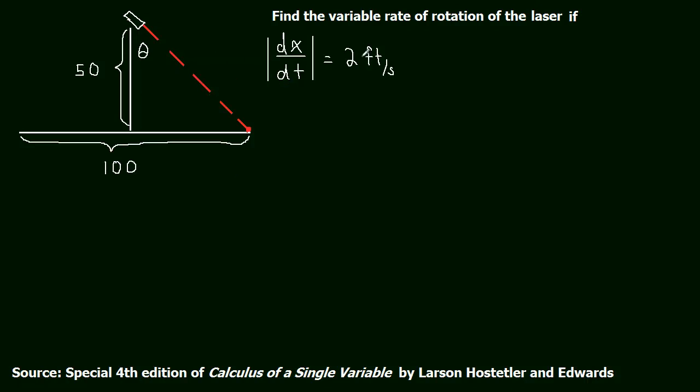Okay, so we want to find the variable rate of rotation of this laser if the rate at which this beam moves across the floor is to remain constant. So how can we do that?